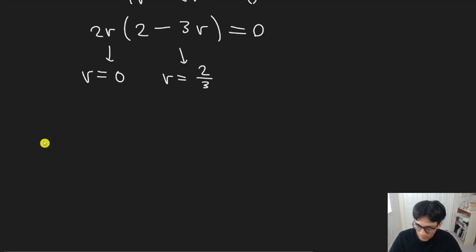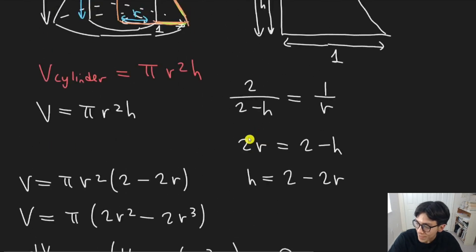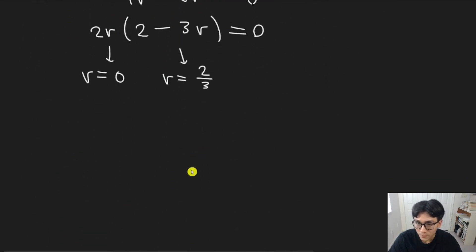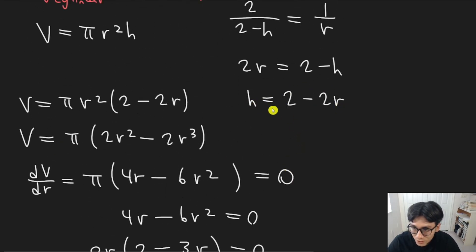Then we need to figure out, to answer the question, we need to find the dimensions of the cylinder with largest volume. We found the radius. We also need to find the height. Once you know the radius, you can figure out the height. And those are our two dimensions. Well, the height is given by two minus two r.